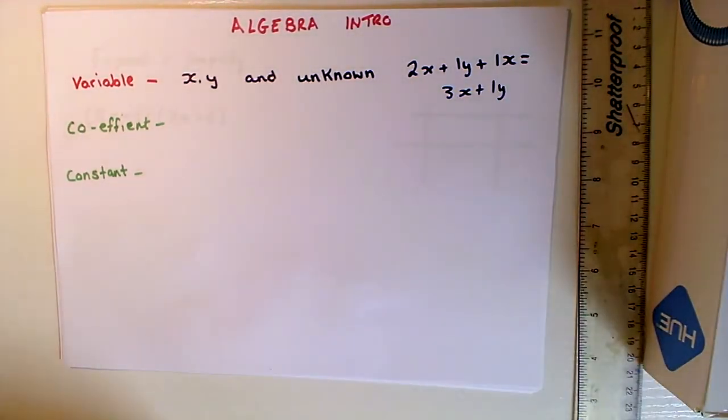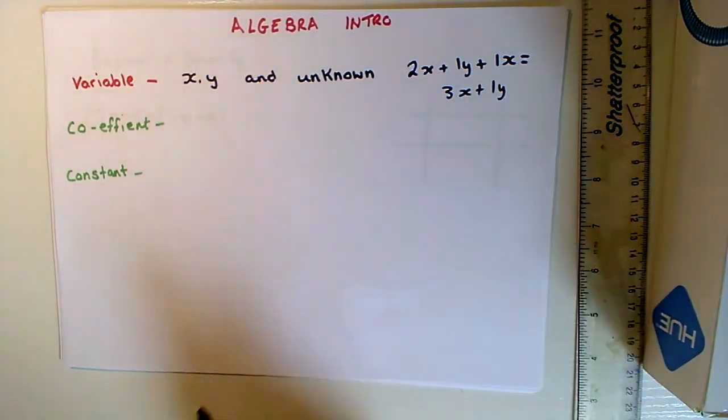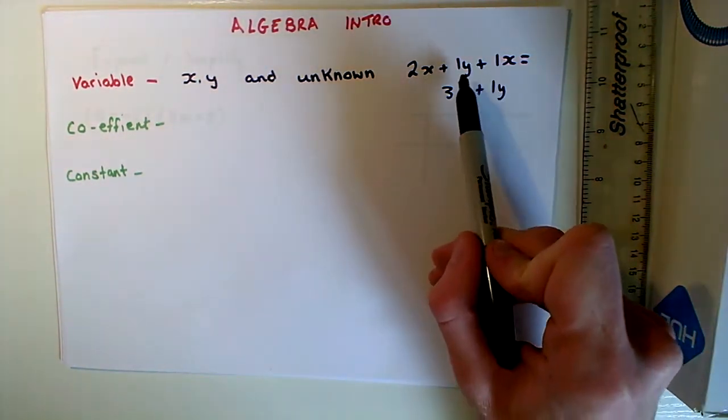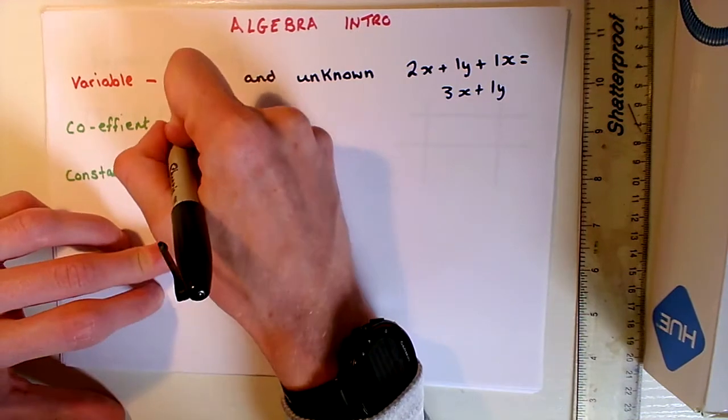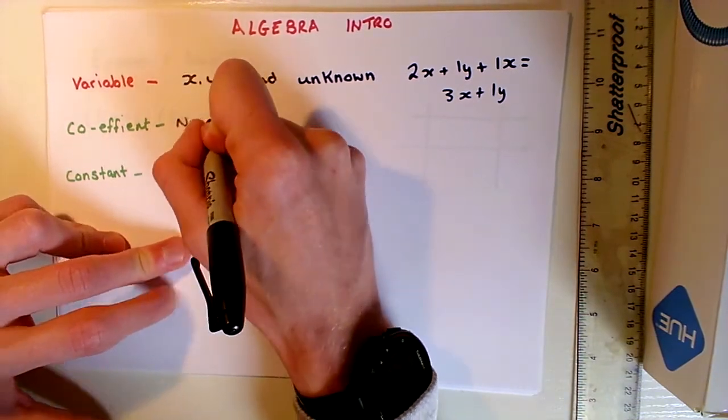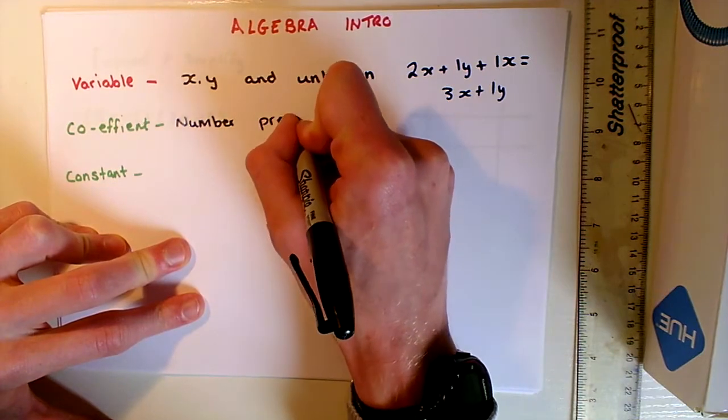Next, what we need to consider is our coefficient. A coefficient is the number or symbol that is multiplying a variable. For instance, in this our coefficient of 2X is 2, our coefficient of 1Y is 1, and then finally our coefficient of 1X is 1. It's the number that typically precedes the variable.